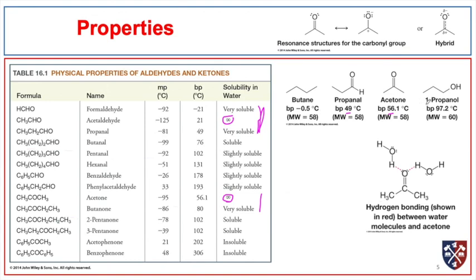These are not as high boiling as something like 1-propanol. 1-propanol can be both a hydrogen bond donor and a hydrogen bond acceptor, whereas aldehydes and ketones are good at forming hydrogen bonds only as hydrogen bond acceptors.